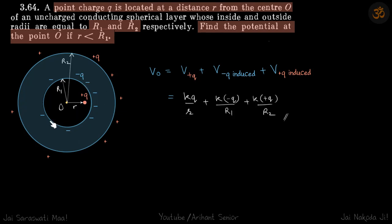The potential due to minus q is k times minus q over r1, and the potential due to the induced plus q on the outer surface is k times plus q over r2. That is our final answer.